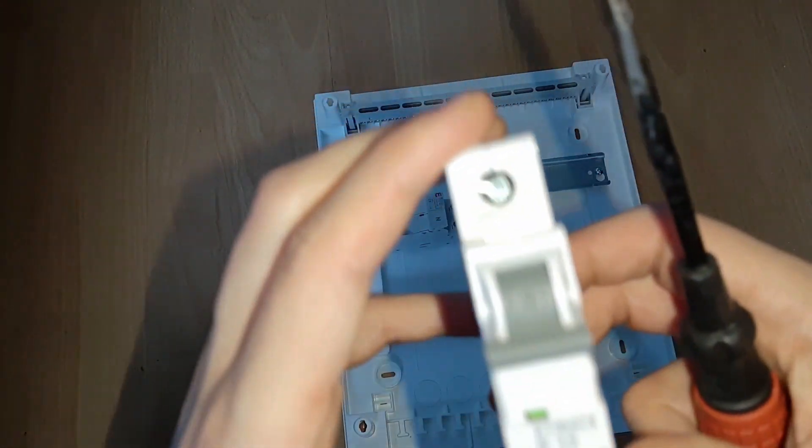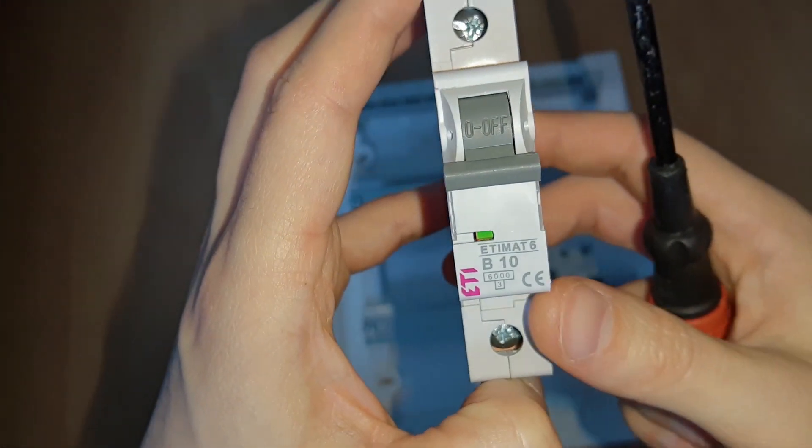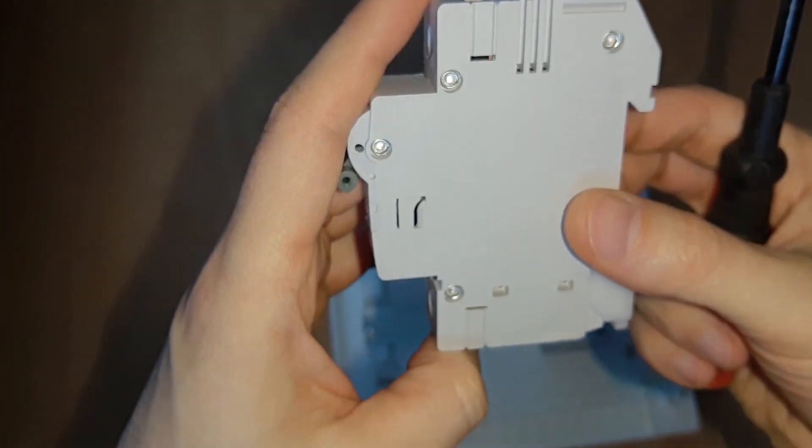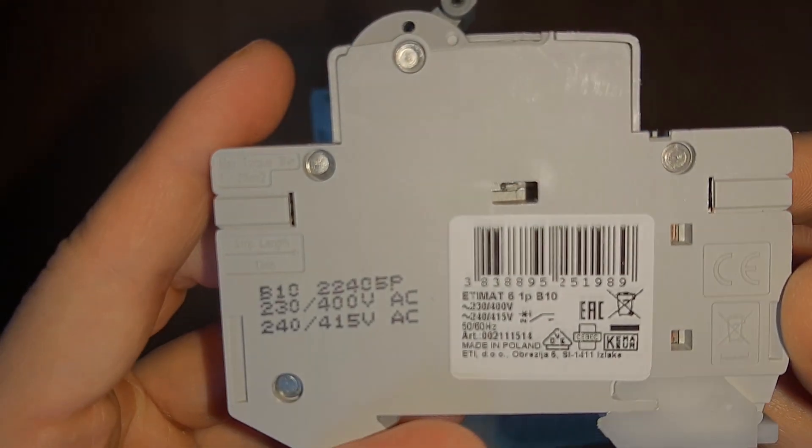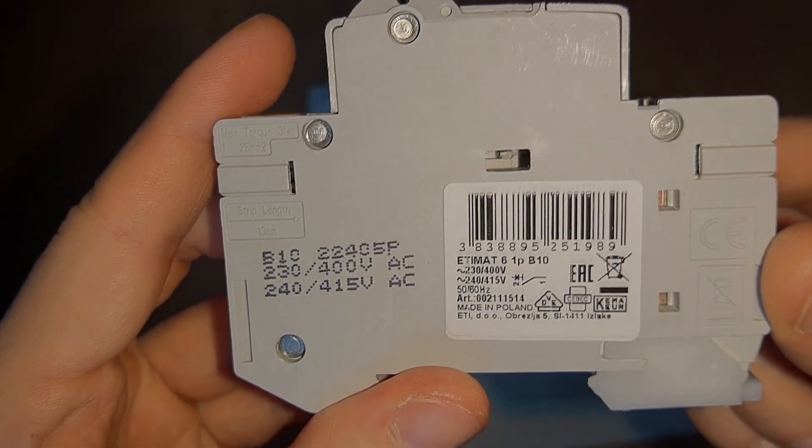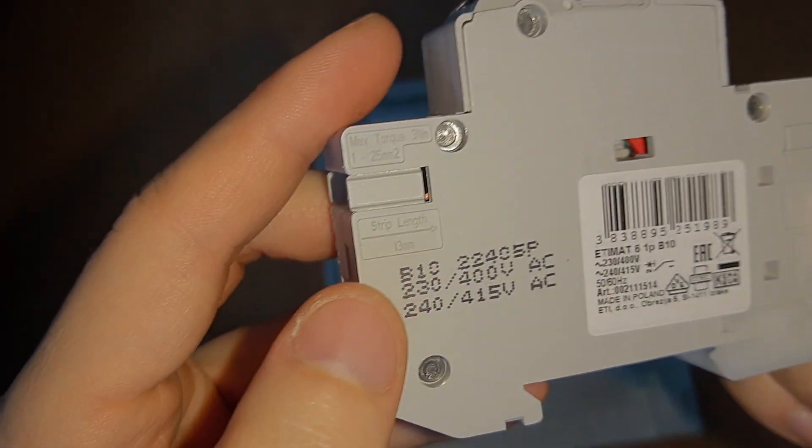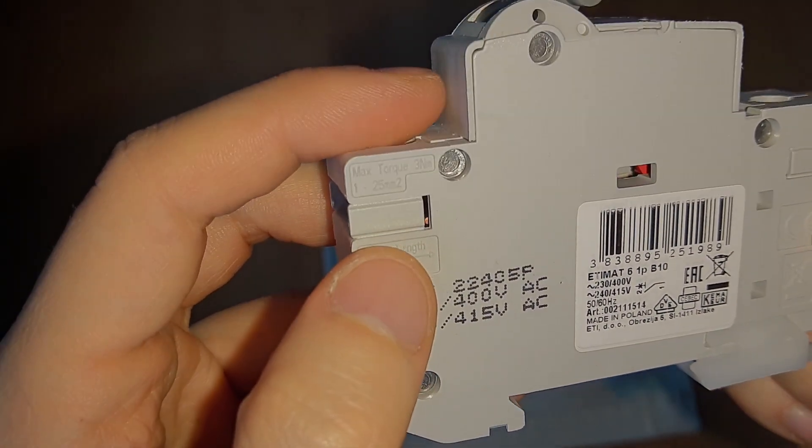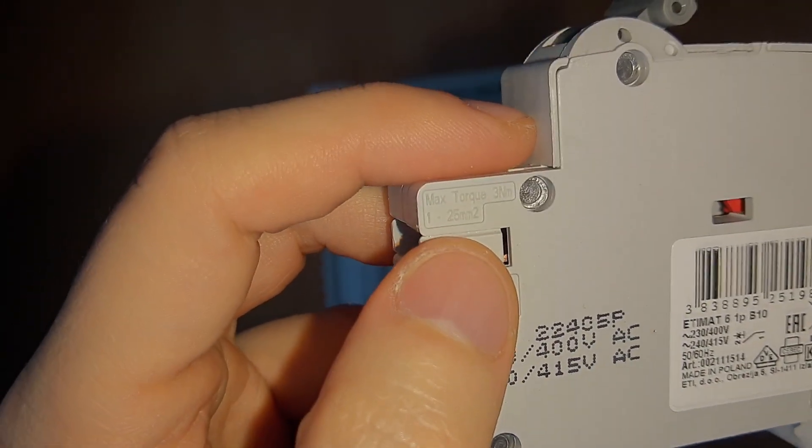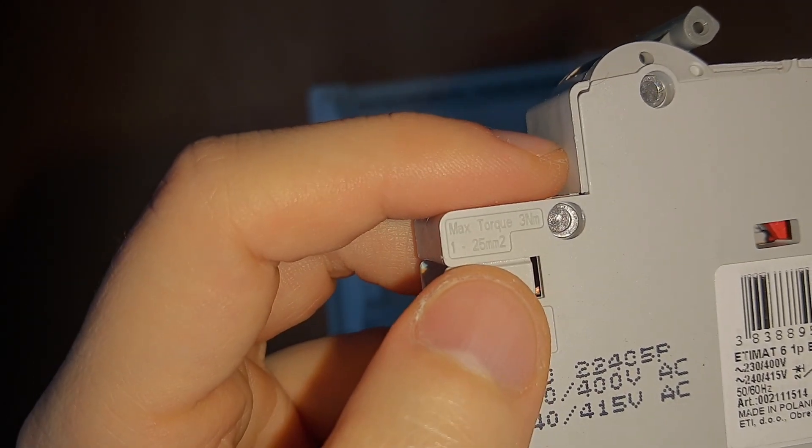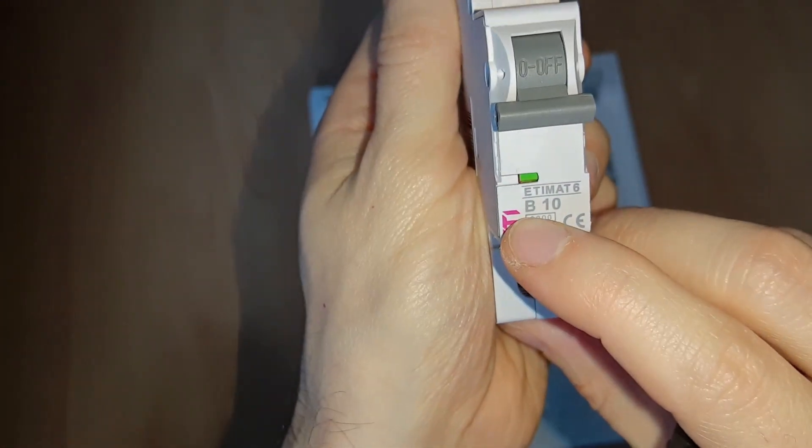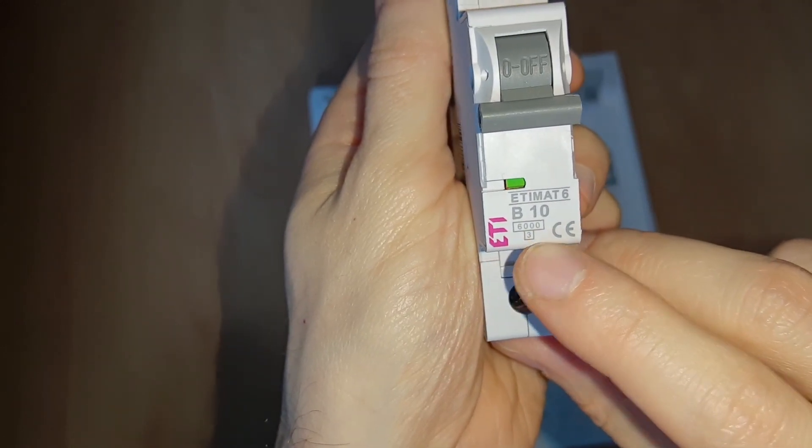Okay, so normal MCBs, micro breakers. You have here strip length 13 millimeters, wire gauge 1 to 25 square millimeters, and torque up to 3 newton meters. This is B type at 6000 kilo amperes.